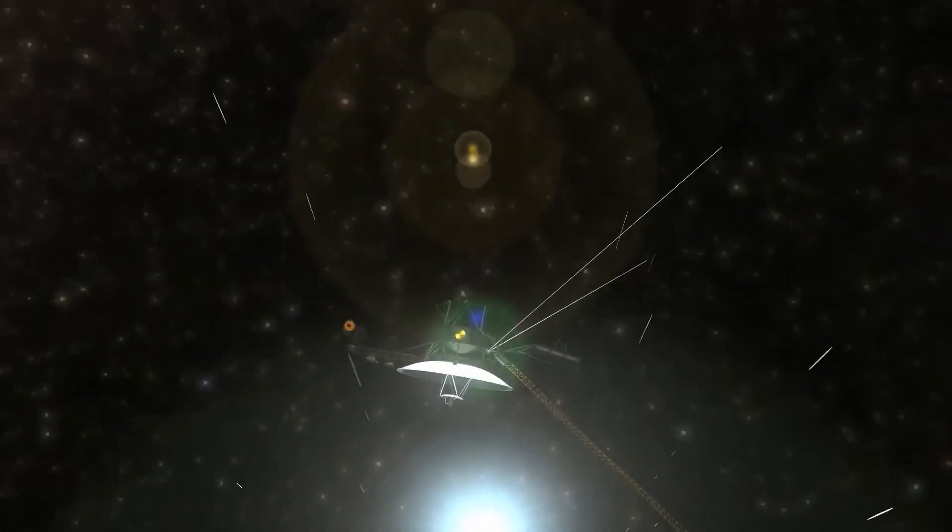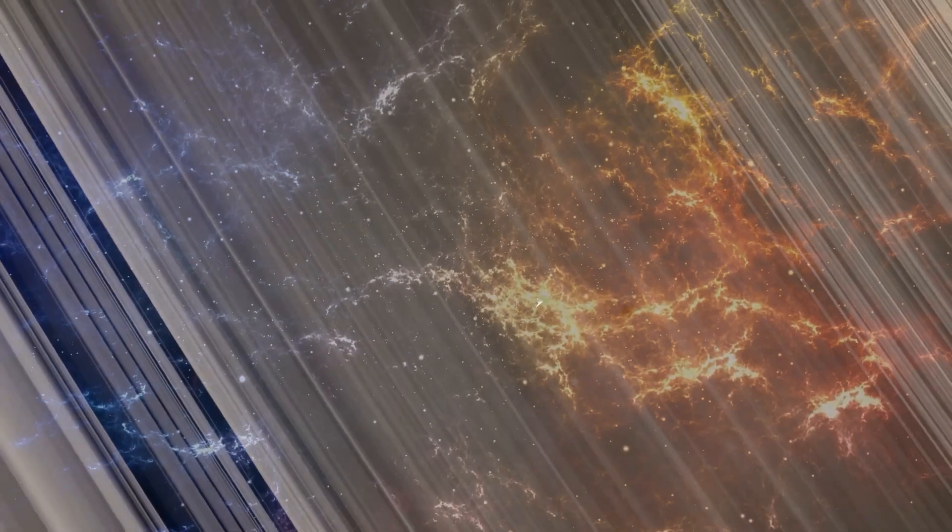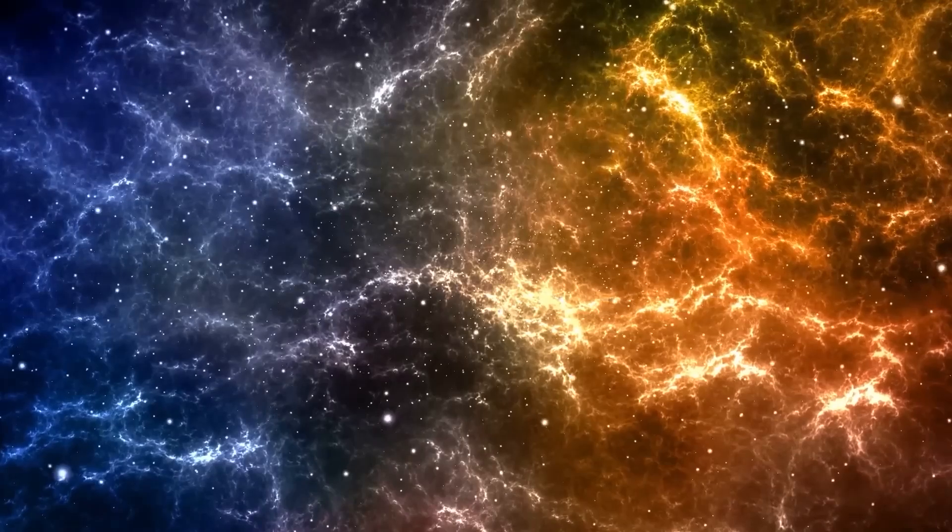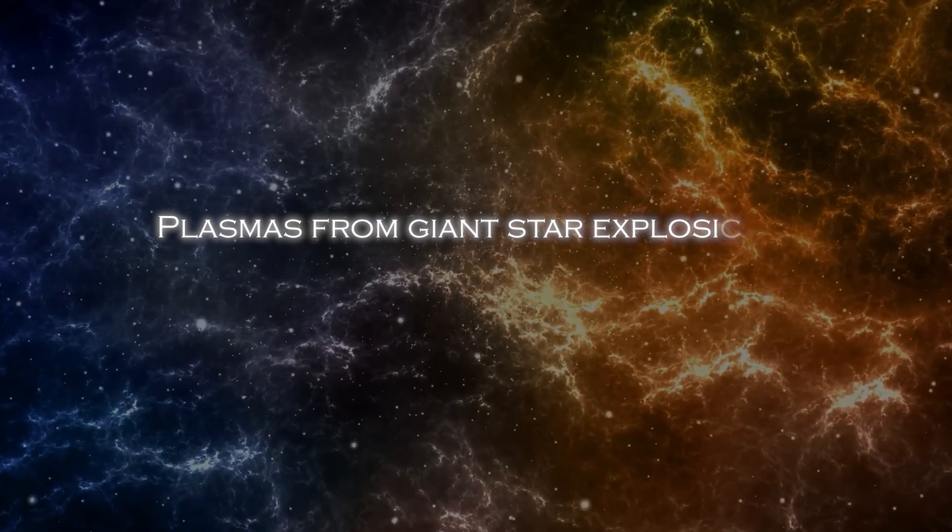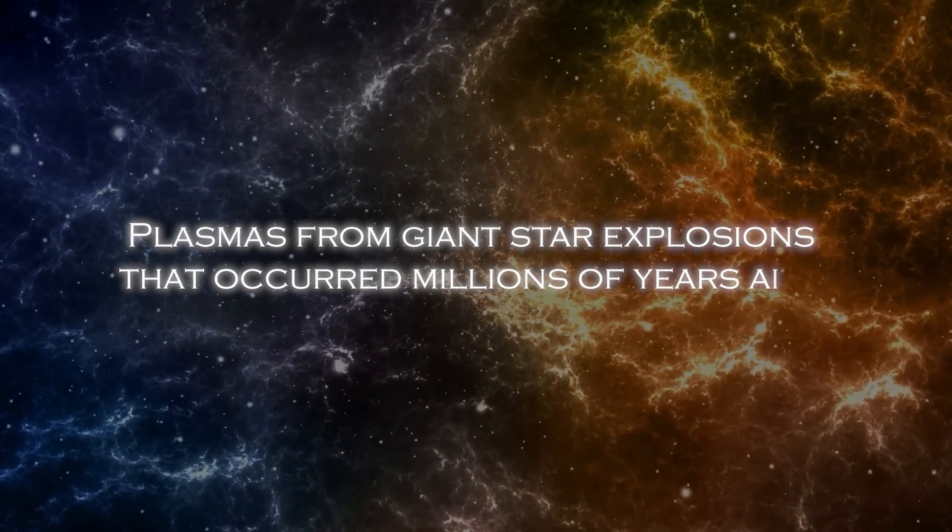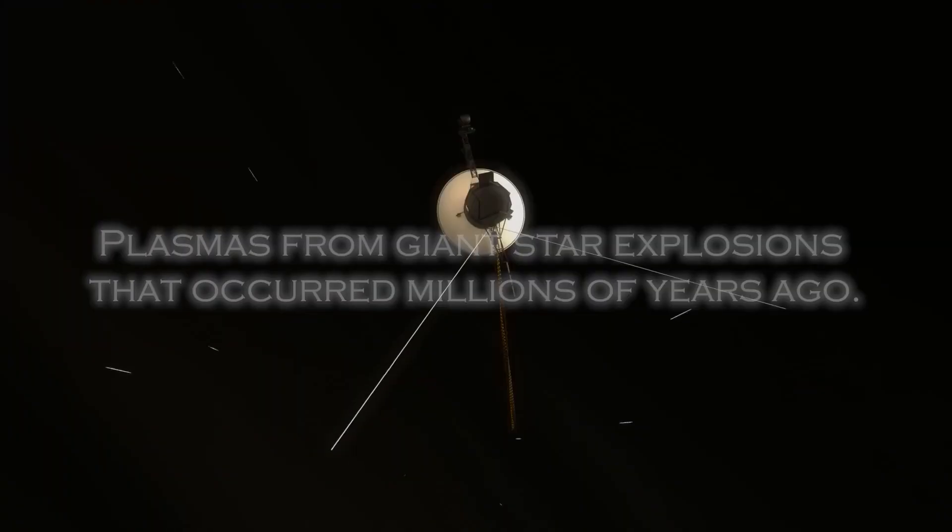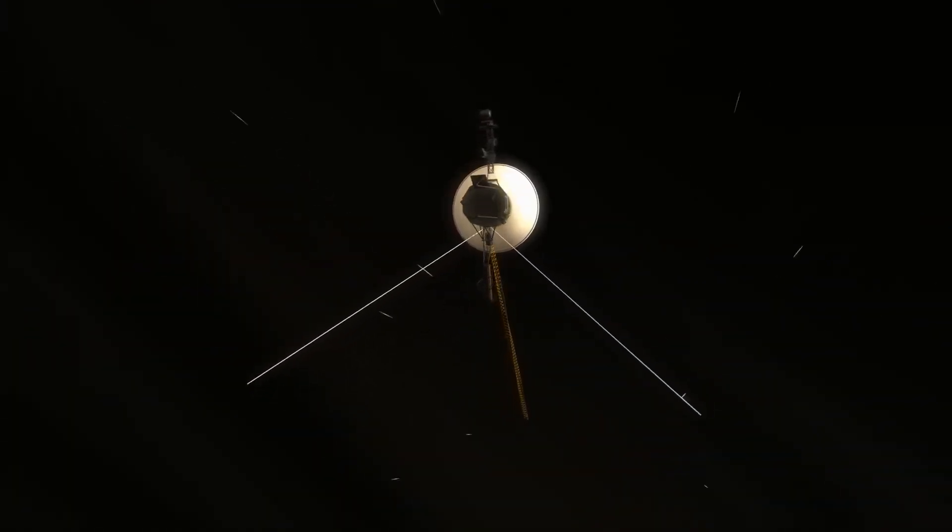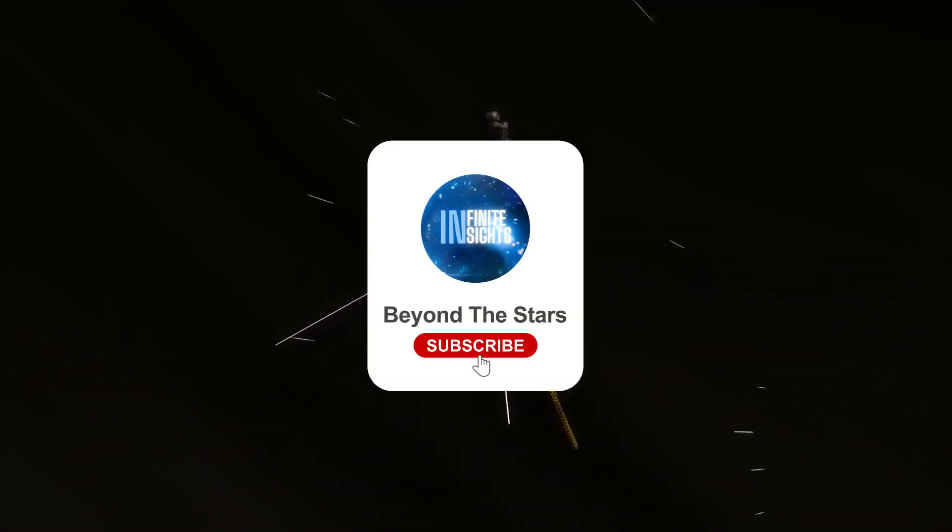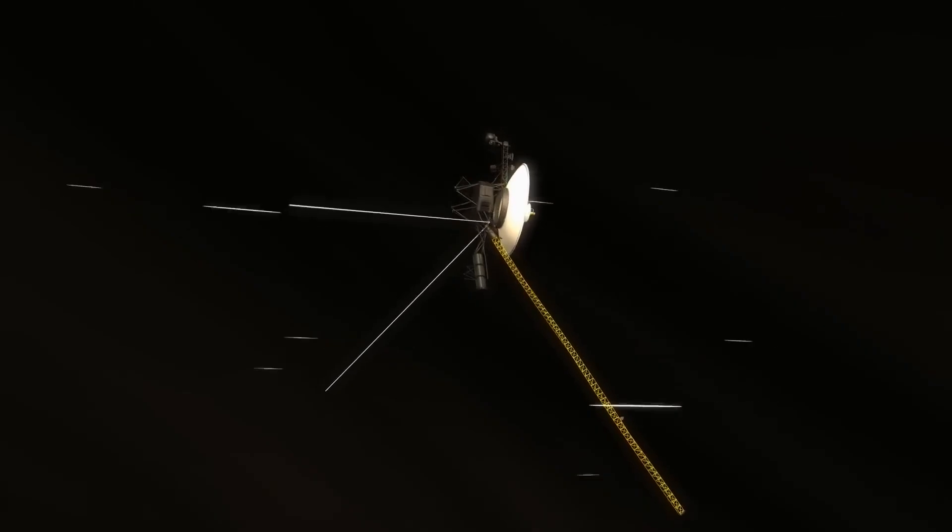Now, Voyager 1 has detected the presence of 300 unknown objects passing through space. This discovery has completely changed our understanding as these objects have been found to be plasma from giant star explosions that occurred millions of years ago. Join us on this journey through the cosmos to find out what these objects discovered by Voyager 1 are all about.